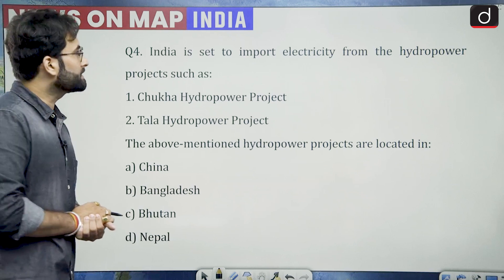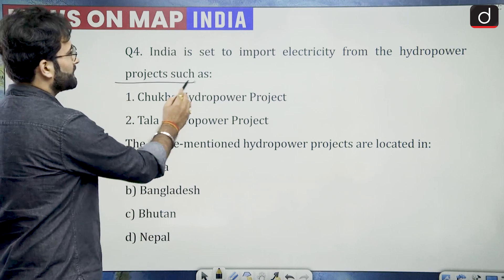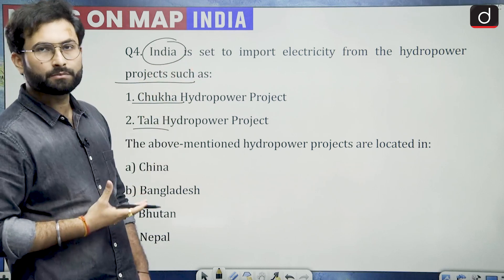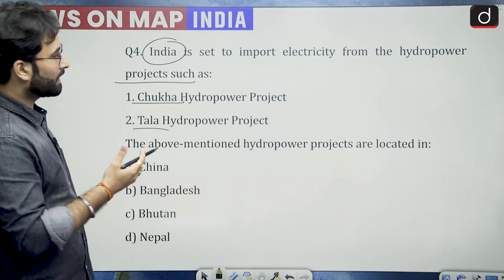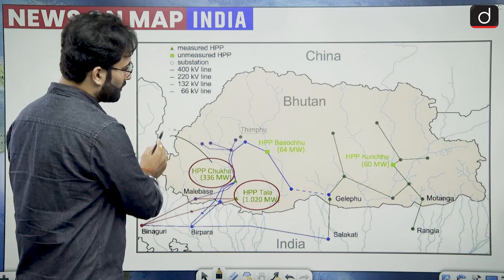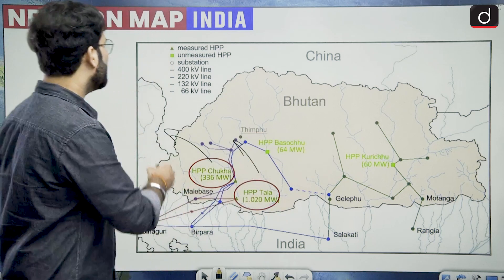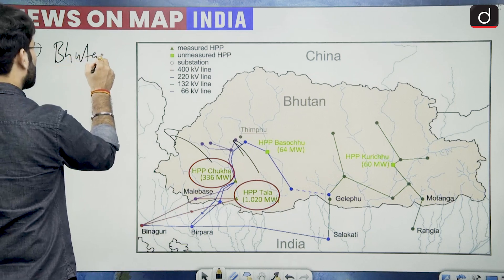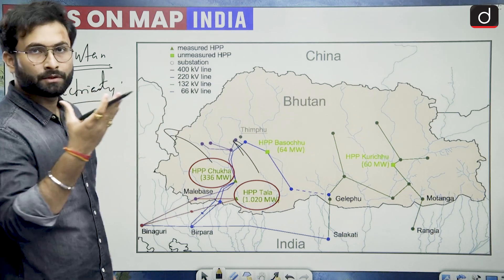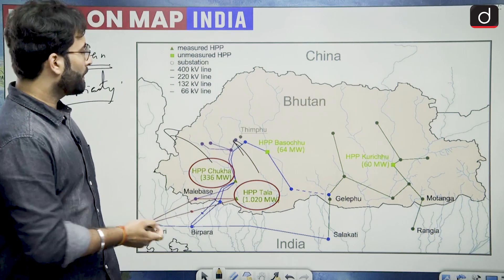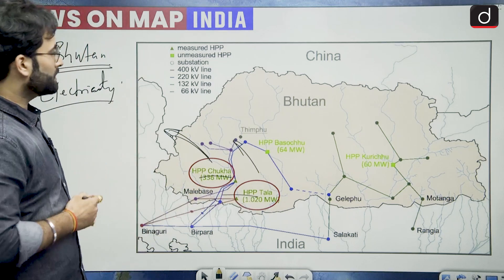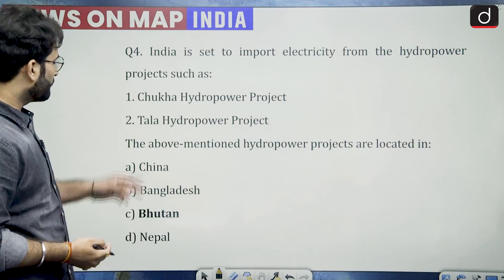Question number four. India is set to import electricity from hydropower projects such as Chukha Hydropower Project and Tala. This is in news because India is planning to import some electricity from a particular country. Here you can see this is your Chukha, this is Tala — there are other hydropower projects as well. India and Bhutan have this electricity-related collaboration where Bhutan sells surplus electricity to India. In that regard, we are importing electricity from Chukha and Tala hydropower projects — these two are present in Bhutan. Your answer would be option C, Bhutan.